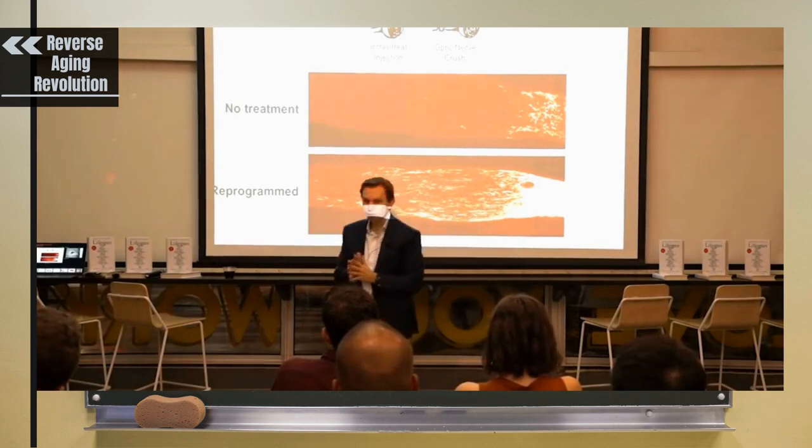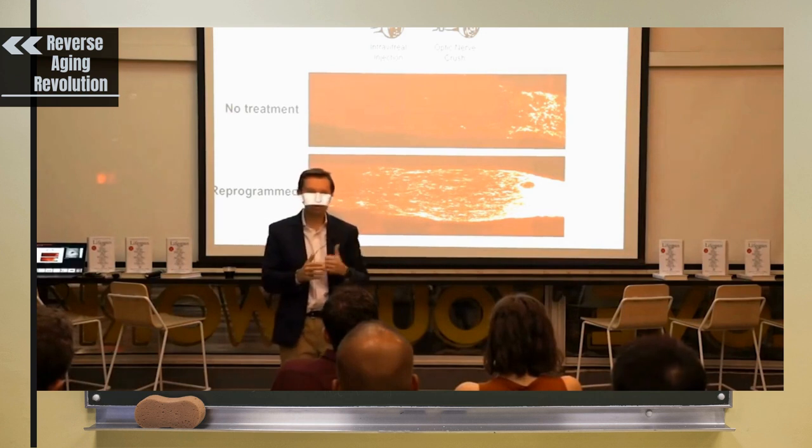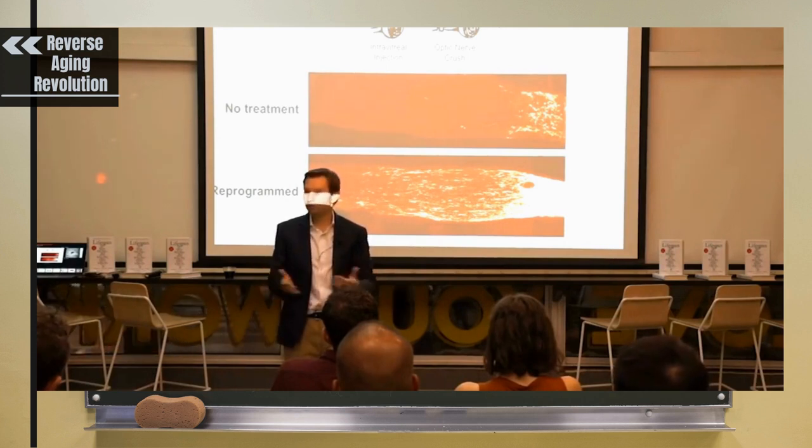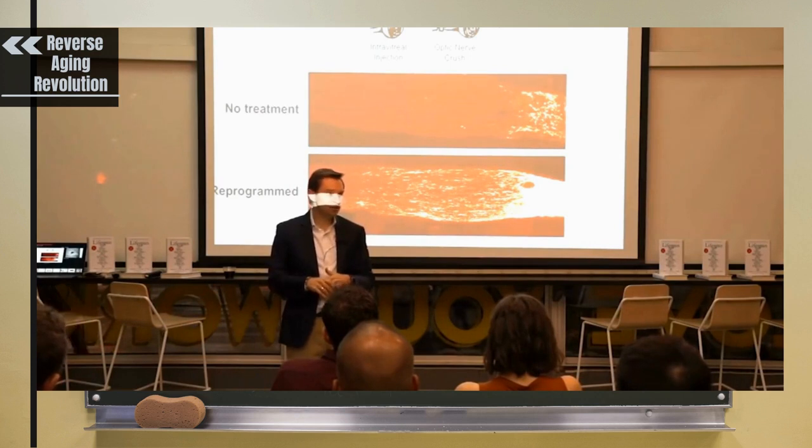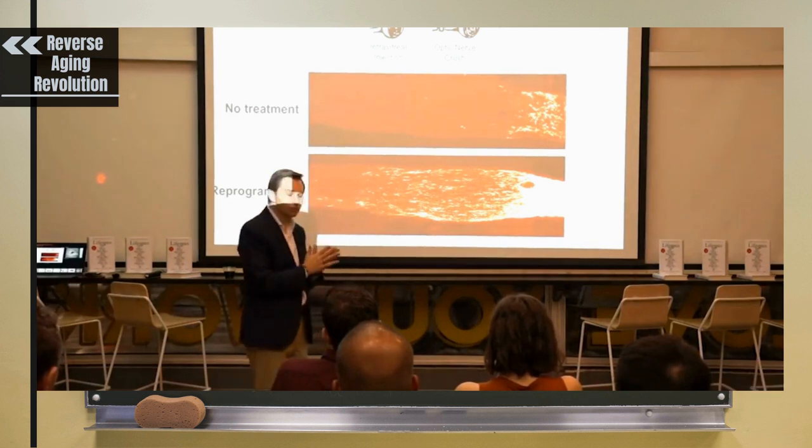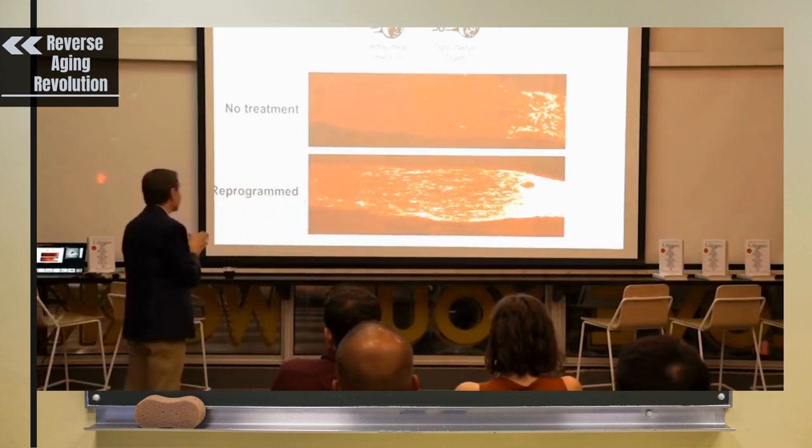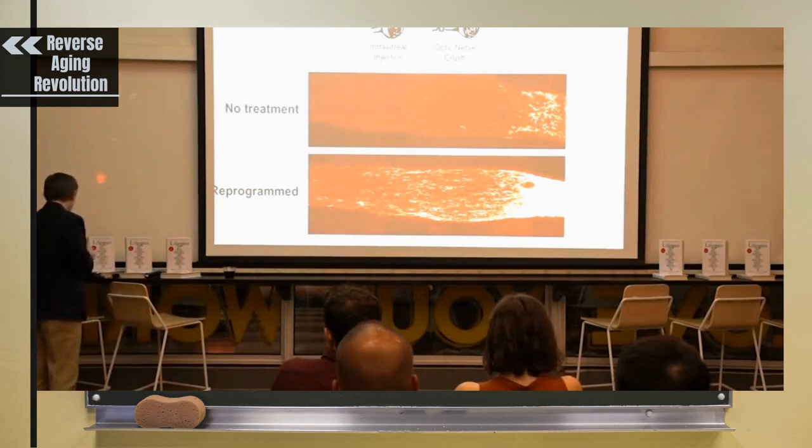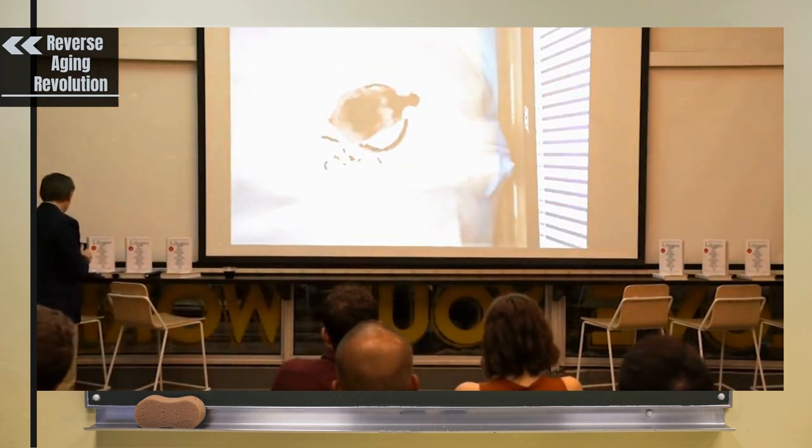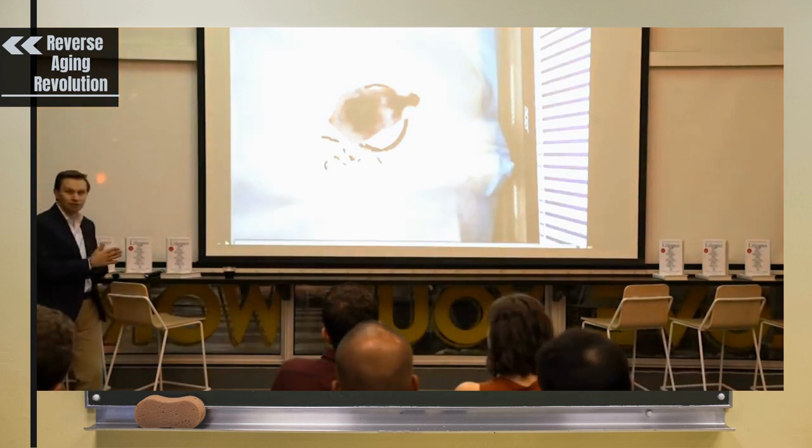But then we did a really cool experiment, which was, if it can make these damaged neurons survive, what about if we give it to just regular healthy but old mice? What happens to their vision? And I don't know about you, but I'm now in my 50s, and I'm starting to become like old mice. We lose our ability to see.